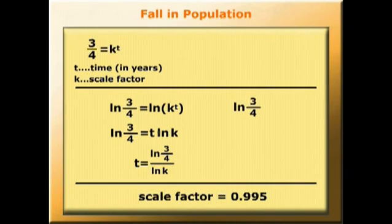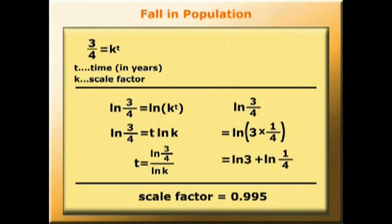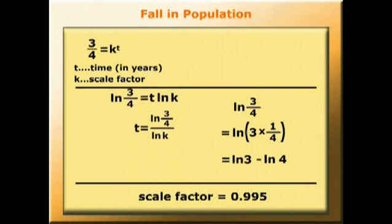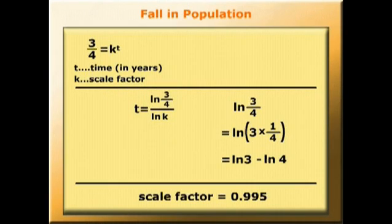Log of 3/4 equals log of 3 times 1/4, which equals log 3 plus log of 1/4. So the log of 1/4 equals minus log 4. So t, we now know, is log 3 minus log 4 over log k.